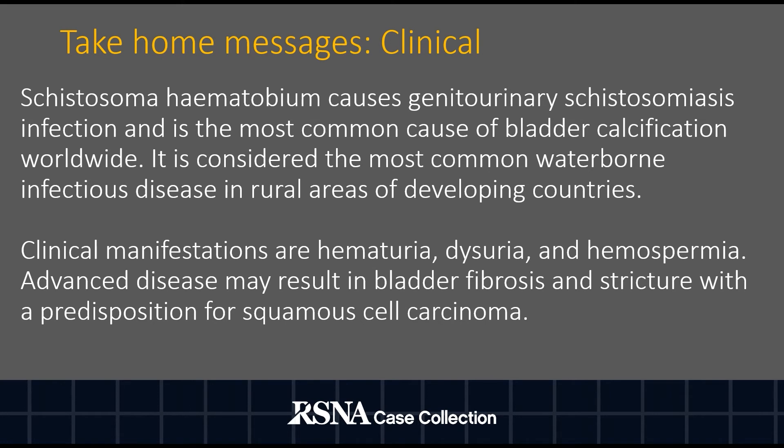Schistosoma hematobium causes genitourinary schistosomiasis infection and is the most common cause of bladder calcification worldwide. It is considered the most common waterborne infectious disease in rural areas of developing countries. Clinical manifestations are hematuria, dysuria, and hemospermia. Advanced disease may result in bladder fibrosis and stricture with a predisposition for squamous cell carcinoma.